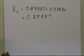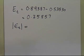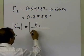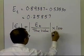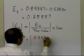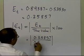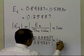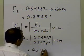So let's go ahead and calculate what the absolute relative true error is, so as to get some kind of a relative judgment on how bad or good this error is. So it is basically the true error divided by true value times 100. So the true error is 0.35857 divided by the true value, which is 0.89387, times 100, and this number turns out to be 40.11 percent.